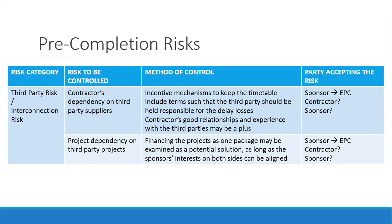Another risk category is third-party risk or interconnection risk. The risks to control are the contractor's dependency on third-party suppliers and the project's dependency on third-party projects. To control this, there must be incentive mechanisms to keep the timetable — for example, providing a bonus for early delivery — which motivates contractors to ensure third-party suppliers deliver on time. Another method is to check the contractor's relationships and experience with third parties.